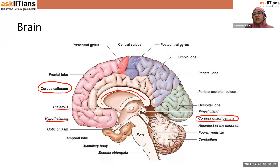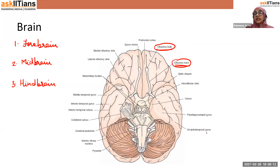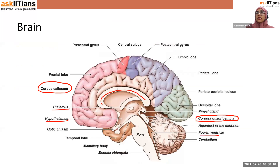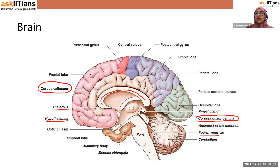You must have noticed the fourth ventricle. There are four ventricles in our brain — these ventricles are simply cavities. Inside the cavities, cerebrospinal fluid is present, which protects the brain against mechanical shocks. Our brain has a first ventricle, second ventricle, third ventricle, and fourth ventricle. Just remember they are cavities.